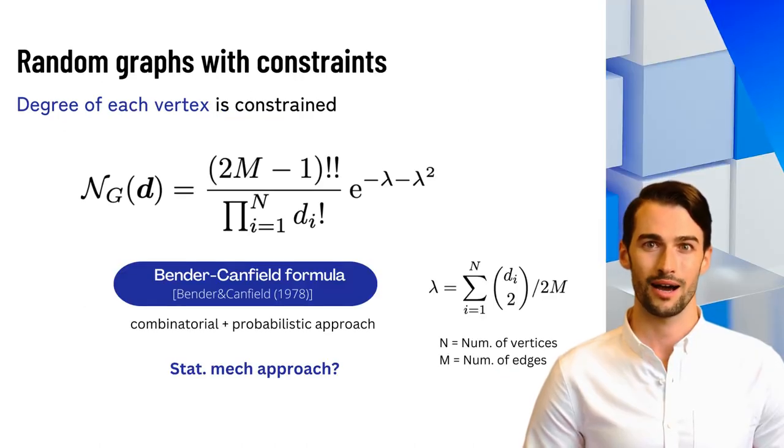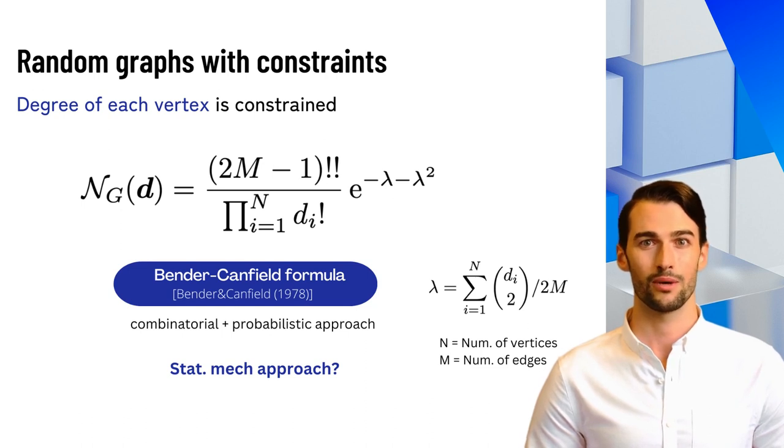In this model, an asymptotic formula for the number of graphs was derived by Bender and Canfield in 1978. Although the formula was derived using combinatorial and probabilistic techniques, this paper derives the formula using a statistical physics approach.